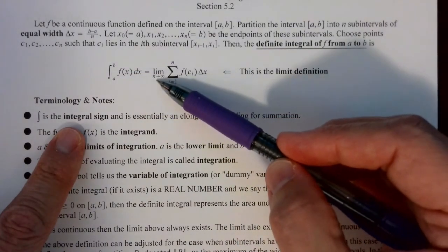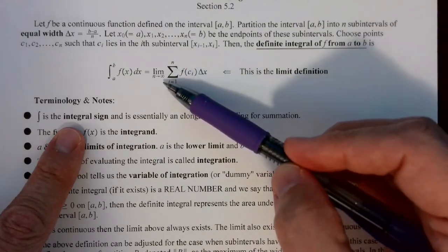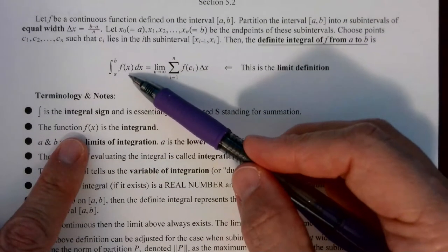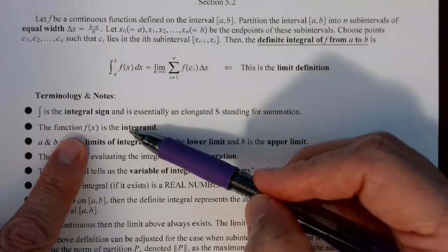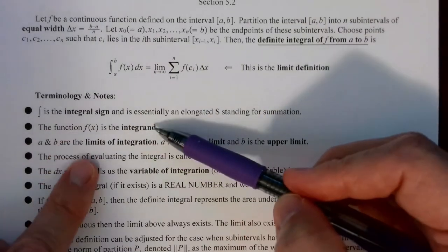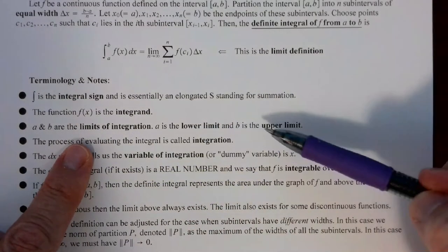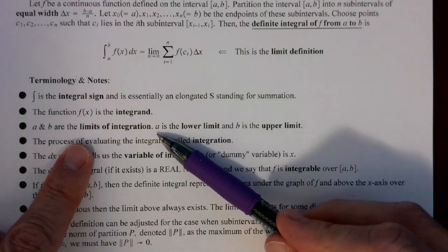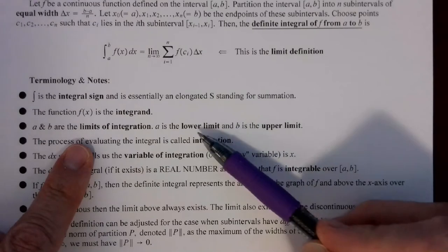The function f(x) we're integrating is called the integrand. A and B are the limits of integration: A is the lower limit, B is the upper limit. In most cases A is less than B, which makes sense — lower limit is smaller than upper limit — but in general that does not have to be the case. A does not have to be less than B.